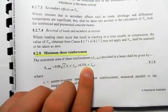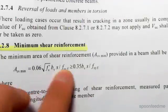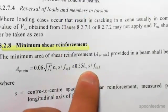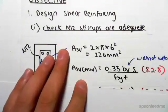Let me just zoom in for you. So Asv min has to be greater than this - that's in section 8.2.8. So I've just written a bit bigger here for you.